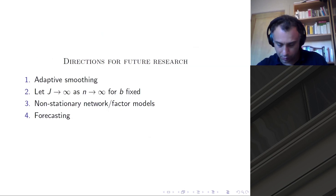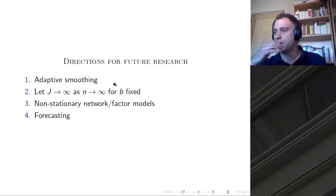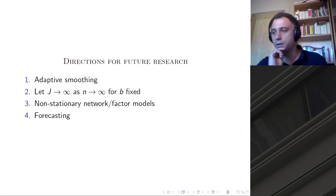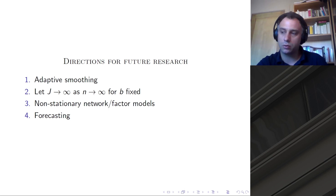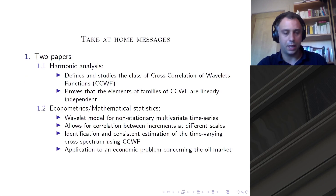I'm running a bit short on time. Future research will consider different paths; I will mention two. The first is adaptive smoothing: it appears both in theory and in practice that tuning the smoothing procedure correctly is crucial for the quality of estimation. The second direction is to capitalize on our ability to model the second-order structure of a non-stationary process in order to develop evolutionary network models and evolutionary factor models. I can stop there and answer questions.